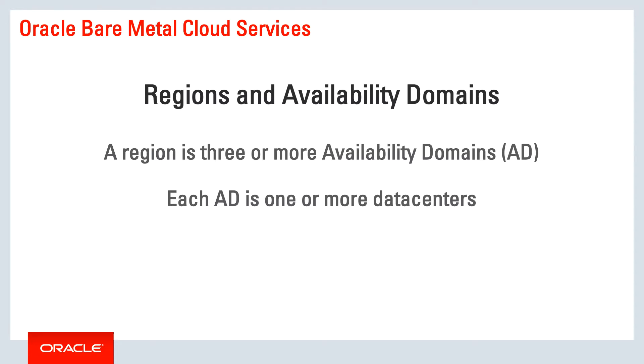Each availability domain is physically separated from every other availability domain by some number of miles. This creates independent fault domains.